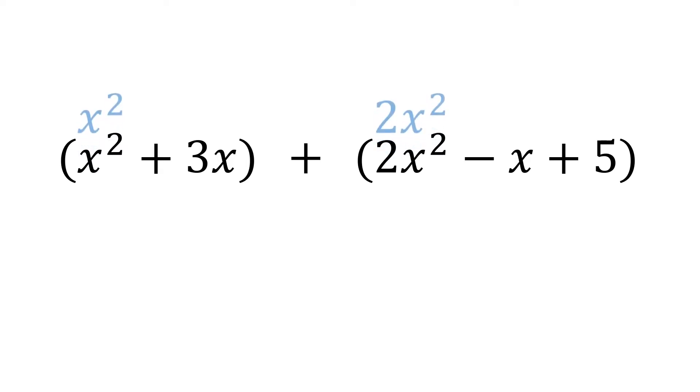x squared and 2x squared are like terms, so we add them and get 3x squared. 3x and negative x are like terms, so we add them and get 2x.